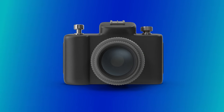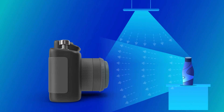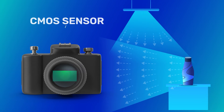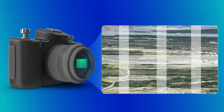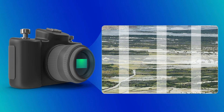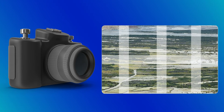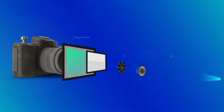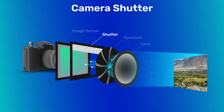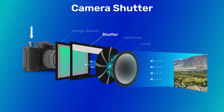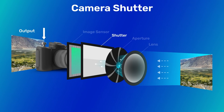We know a camera has a lens, and it needs to record incoming light, so it has a sensor that records incoming light. The sensor needs to record the intensity of light coming from the scene at a particular instant of time, so it needs a shutter. The shutter opens for a small amount of time when you press the button on your camera to take a picture.